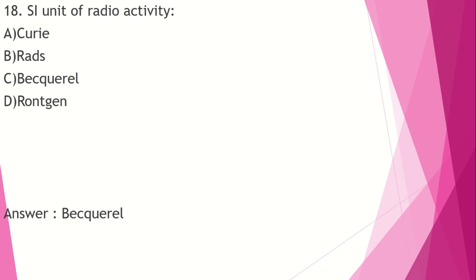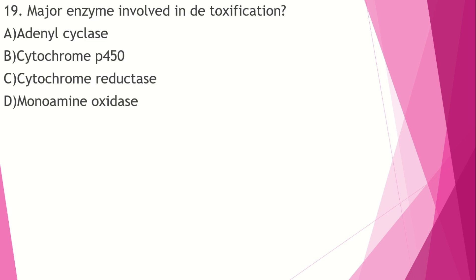The major enzyme involved in detoxification is cytochrome P450. Other options include adenylyl cyclase, cytochrome reductase, and monoamine oxidase. The answer is cytochrome P450. The liver is the most important detoxification organ in the body, and cytochrome P450 converts toxins into water-soluble forms for elimination.